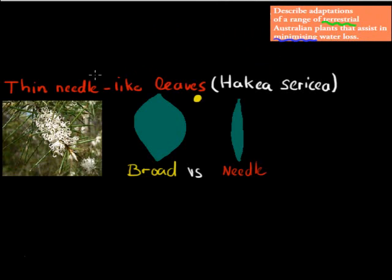The first example is the Haccia sericea, which is another name for a plant that has thin, needle-like leaves. You can see these needle-like leaves are really thin compared to normal leaves.